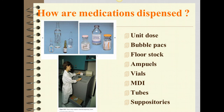Medications are dispensed in a variety of ways: unit dose, bubble packs, floor stock, ampules, vials, MDI tubes, and suppositories. With floor stock, over-the-counter meds can be available on a unit outside of the Pyxis — an example would be an ammonia inhalant at the bedside or bulk Colace. With bubble packs, you will see multiple medications in these bubbles packed together. During your skills lab, you will see different examples of these also.